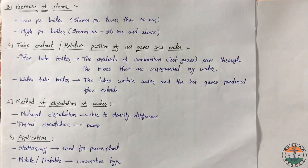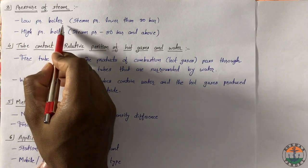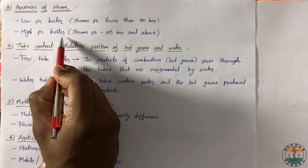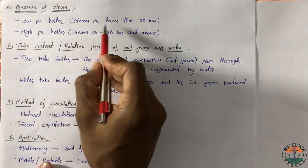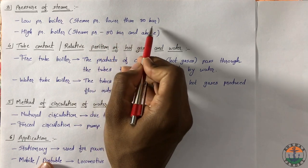According to the pressure of the steam, boilers are classified into low pressure boilers and high pressure boilers. In low pressure boiler, steam pressure is lower than 80 bar.